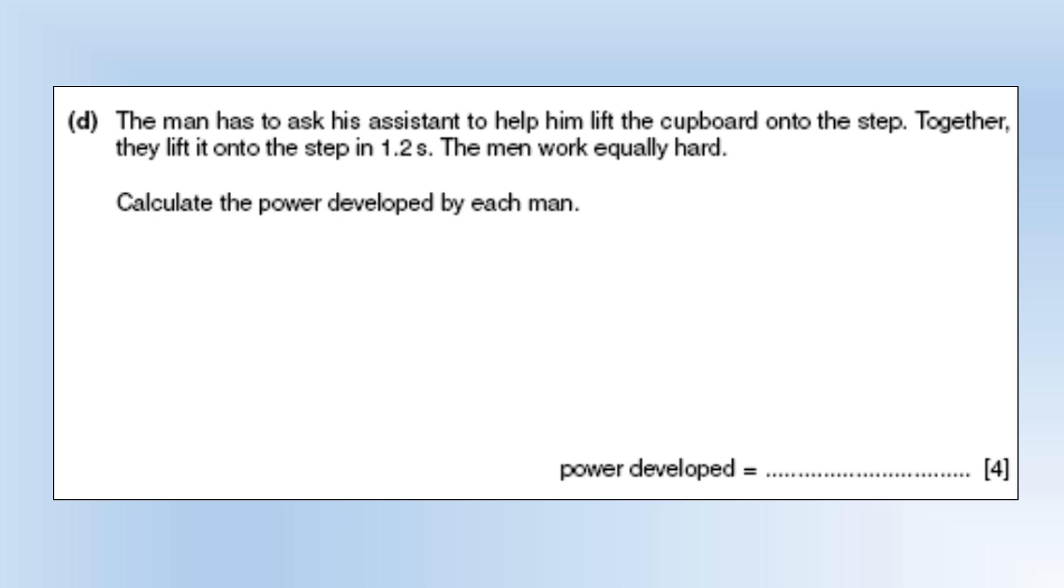The man has to ask his assistant to help him lift the cupboard onto the step. Together they lift it onto the step in 1.2 seconds. The men work equally hard. Calculate the power developed by each man. The total power would be the work done divided by 1.2, giving you 120 watts, which means each person has supplied 60 watts of power.